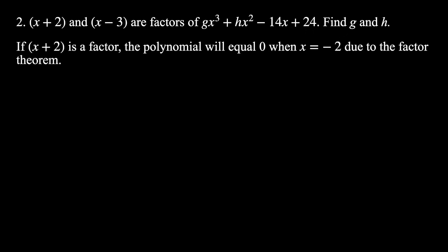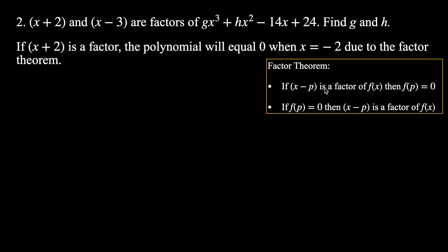Think of the factor theorem. If x + 2 is a factor, then the polynomial equals 0 when x = −2. That's the first statement: if x minus p is a factor, then f(p) = 0. Note the sign carefully — because the factor is x + 2, we plug in x = −2. Plugging in −2 gives us an equation equal to 0.